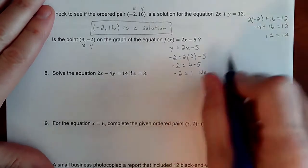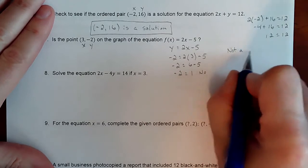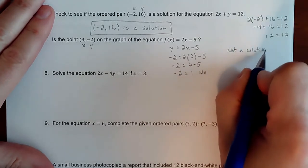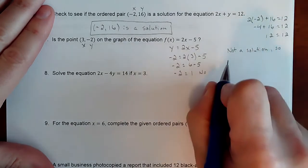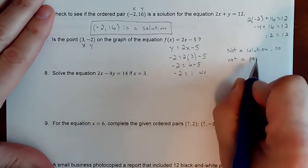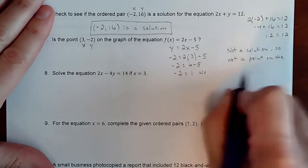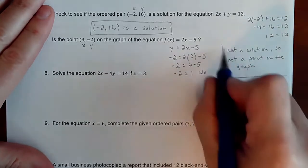But 6 minus 5 is not going to equal negative 2. So no. So it's not a solution, which means not a point on the graph.